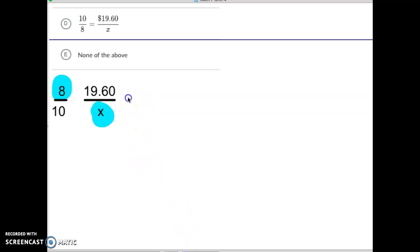There's another way we could write this. We could also write it this way, where the 8 goes with the $19.60 going in this direction, and the 8 goes with the 10 in this direction. But you will still notice the 8 and the X are in opposite corners of each other.